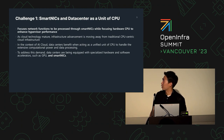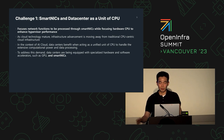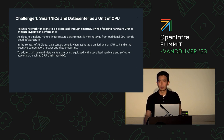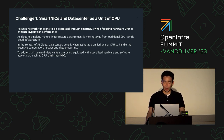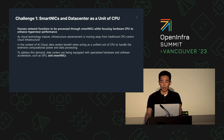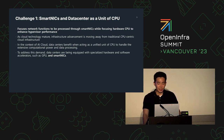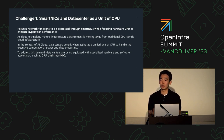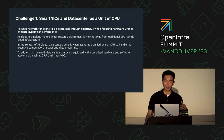So why SmartNICs? SmartNICs are able to enhance both network and CPU capability by offloading tasks. They provide various functions — not just network functions but also others. It's a very common approach to solving CPU and network performance challenges. As cloud technology matures, infrastructure advancement is moving away from traditional CPU-centric architectures. In the context of AI cloud especially, data centers benefit when the CPU is freed to act more optimally.